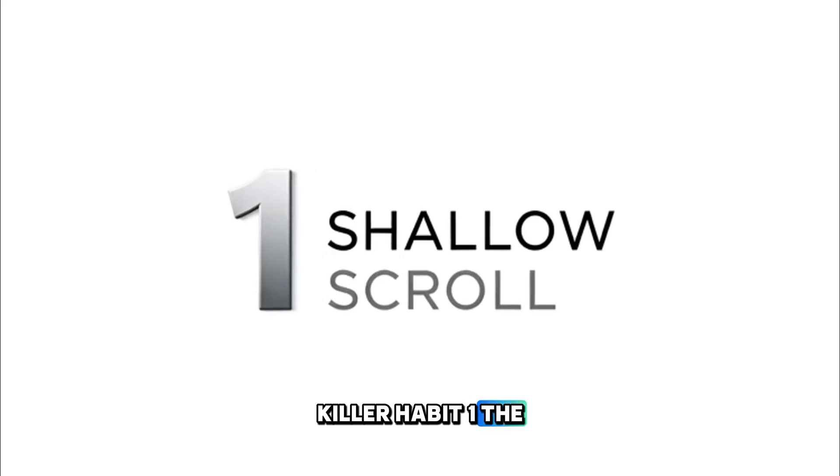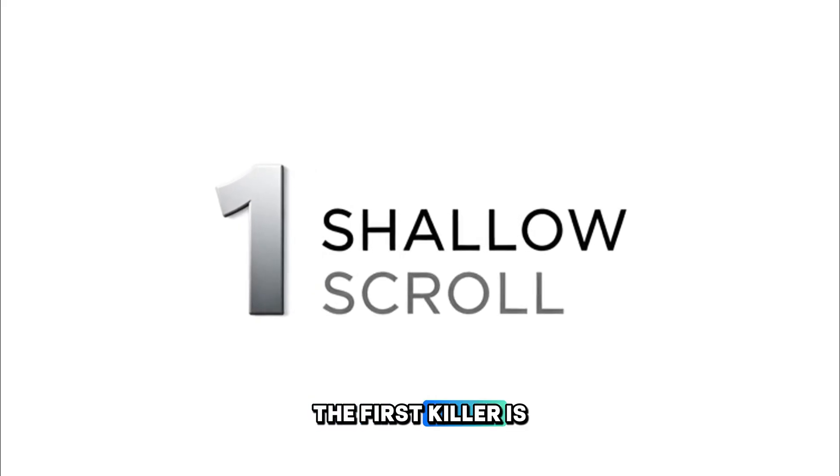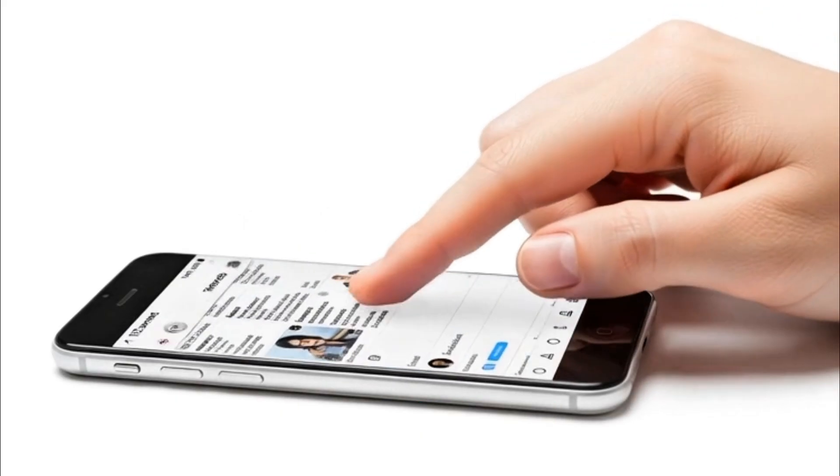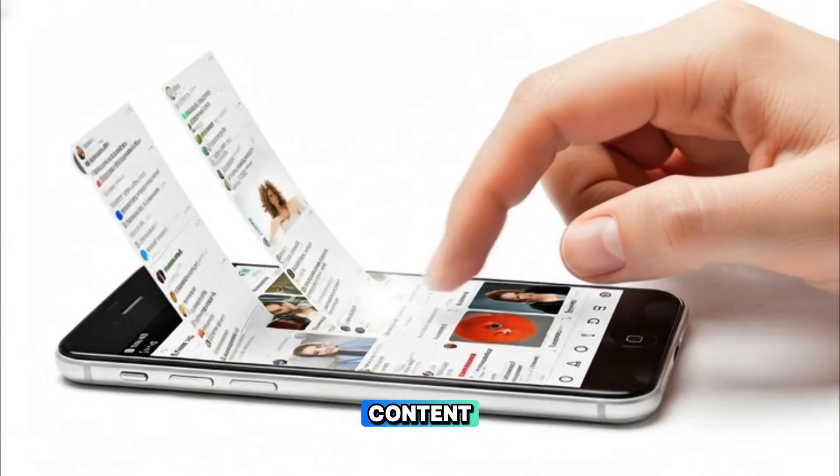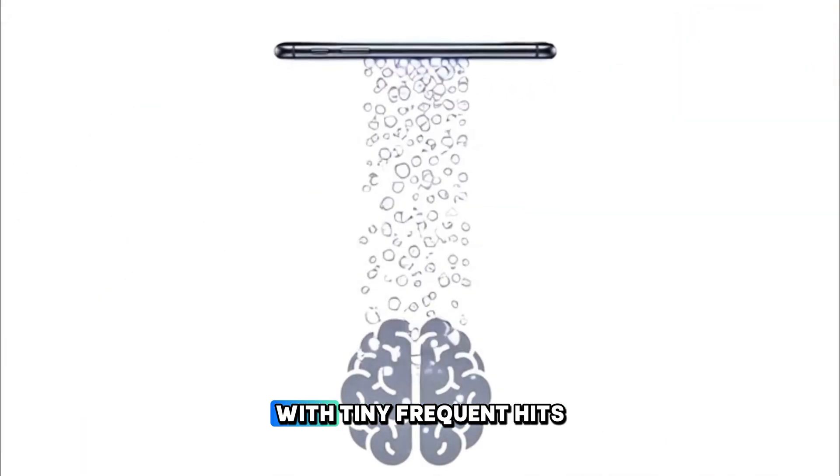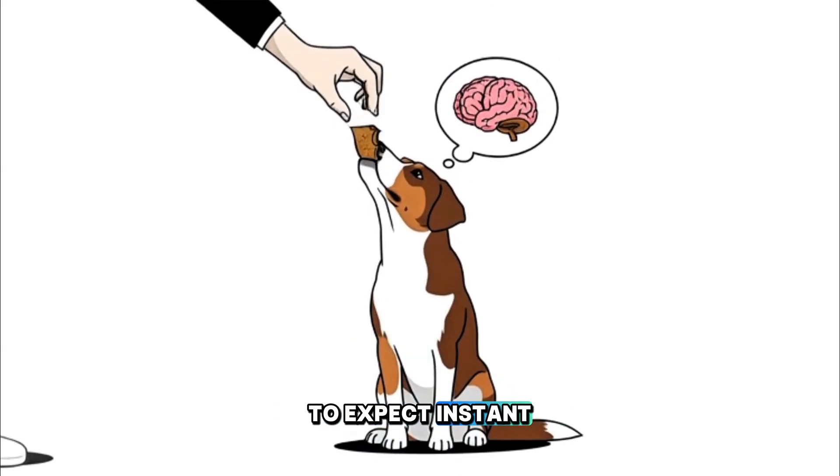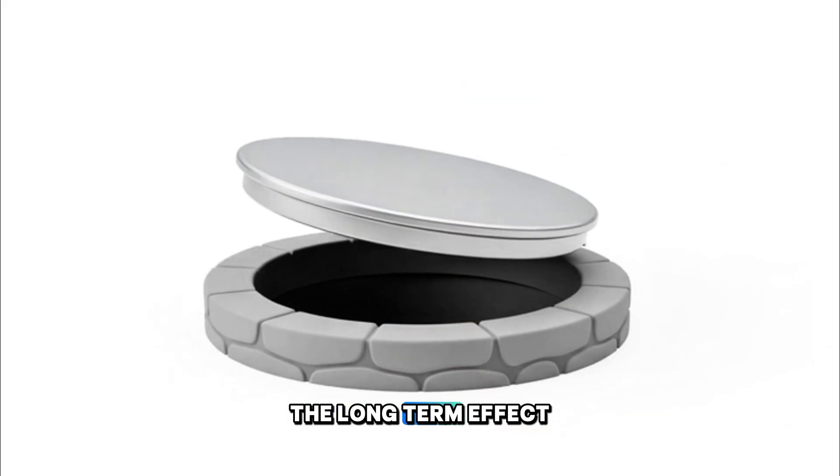Killer habit one: the shallow scroll, dopamine depletion. The first killer is the constant shallow scroll on your smartphone. When you endlessly consume low-value social media content, your brain is rewarded with tiny, frequent hits of dopamine. This trains your brain to expect instant, continuous novelty without effort.